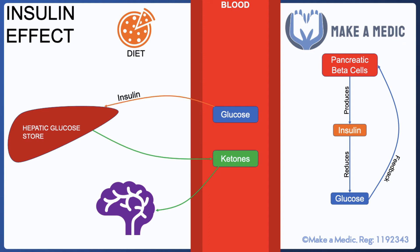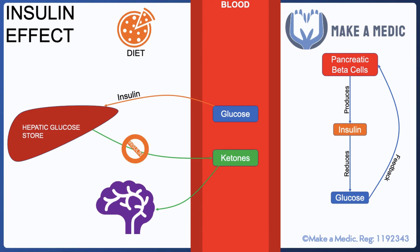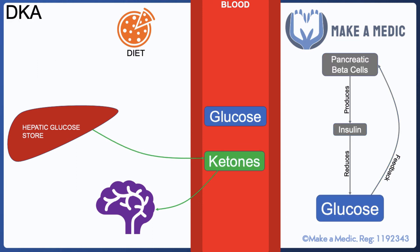One of the main effects of insulin is to push glucose into cells and into hepatic glucose stores. However, another key effect is that it switches off ketone production. This makes sense because ketones are only necessary when glucose is in short supply. If insulin is only released in the presence of high glucose, there'll be enough glucose for the brain to use as an energy source — and hence insulin stops ketone production. This is really the basis of DKA.